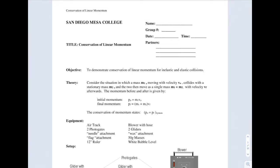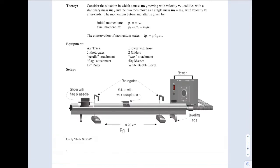For the conservation of linear momentum lab, you're going to be doing two different types of collisions. This is a picture of the track — you'll have a glider which can go frictionlessly on the level air track. On top of the glider you have this flag, and what the flag does is when it passes through this photo gate, the photo gate uses light as an optical switch to measure the time when the flag passes through.